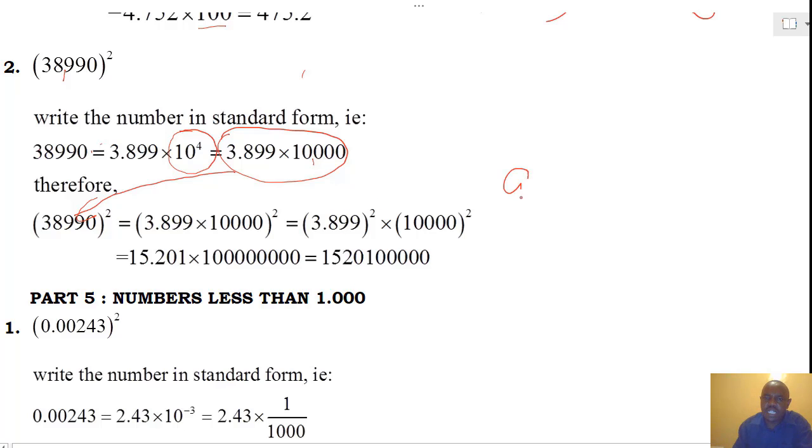As we had earlier done, notice that A times B, everything to N, is equals to A to N multiplied by B to N. Therefore, our new number becomes 3.899 square multiplied by 10,000 square. And the first number we read from the table, and we are going to get 15.201. Whereas the second number we expand directly, and we multiply the two. Hence, we get the square for 38,990.